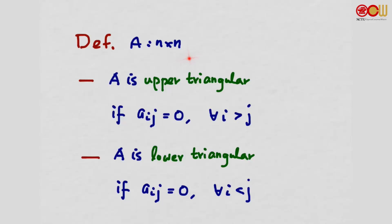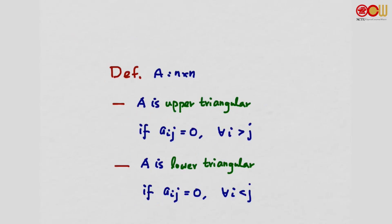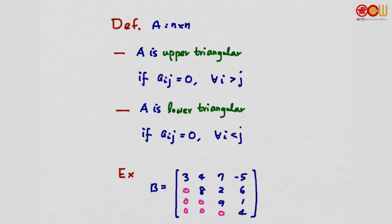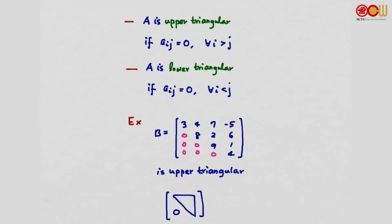Definition: A is an n by n matrix. We say A is upper triangular if the entries of A equal 0 whenever i is larger than j. For example, this B matrix. All the non-zero coefficients are here, and all the other coefficients, the pink coefficients, are equal to 0. The lower half corresponds to the case that i is larger than j. So this is an upper triangular matrix.